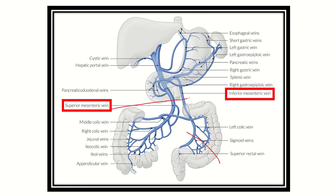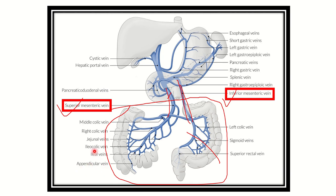Here in the picture we can see the colon is drained by two important large veins: the superior mesenteric vein and the inferior mesenteric vein. The tributaries include the appendicular vein, ileocolic vein, jejunal veins, right colic vein, middle colic vein, left colic vein, sigmoid vein, and superior rectal vein. These are the tributaries of the superior and inferior mesenteric veins.